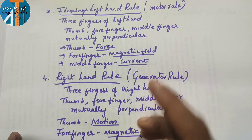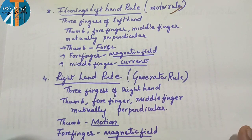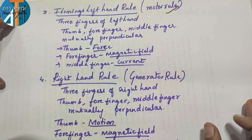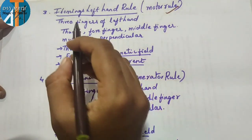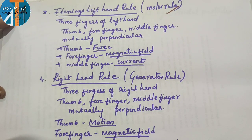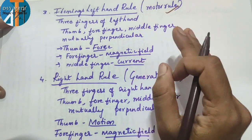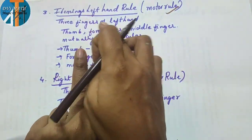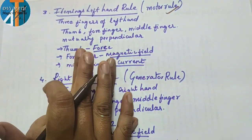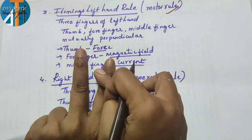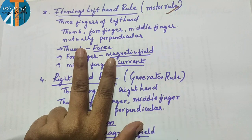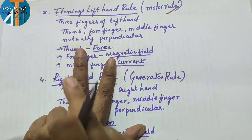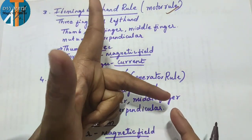Fleming's left-hand rule, also called the motor rule. Three fingers of the left hand — thumb, forefinger, and middle finger — must be mutually perpendicular to each other. This rule applies to the motor, which converts electrical energy to mechanical energy.